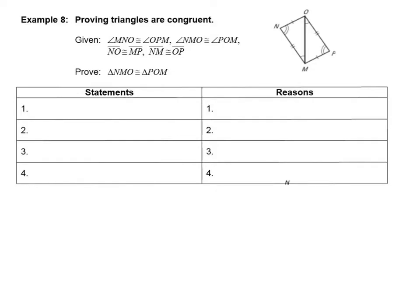For example 8, what we're given is a classic two-column proof. I have my statements listed on the left and my reasons listed on the right. What happens in these proofs is I'm given a certain set of information, and my goal is to prove a specific statement. In this case, I want to prove that triangles NMO and POM are in fact congruent.